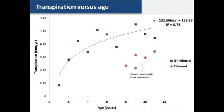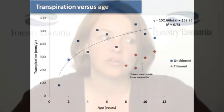Here are some of my results. This chart shows plantation age versus the amount of water that the plantation is transpiring. You can see that as the plantation gets older and the trees become larger and the canopy becomes denser, a greater volume of water is transpired. You can also see from the red diamonds that when we thin a stand — removing about half of the stems so the remaining trees have more space to grow — transpiration is diminished for a significant period.